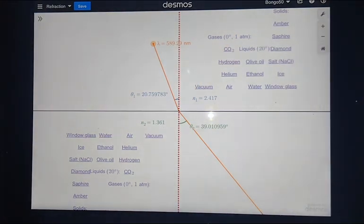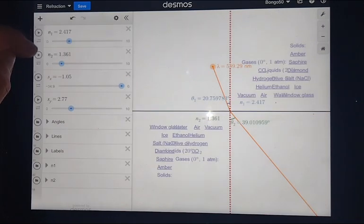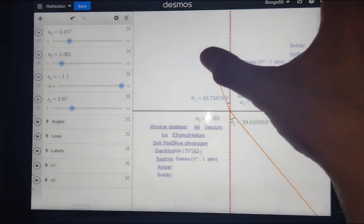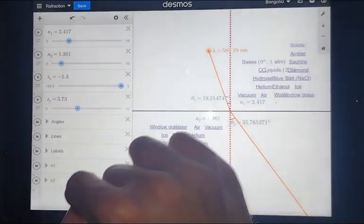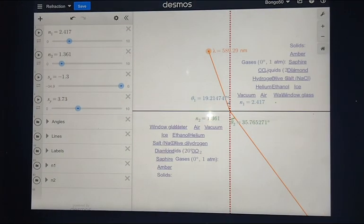You can do various other materials. If you want to input a custom refractive index you can do so here with n1 and n2. S of x and S of y control the position of the point, and these folders down here contain all of the inner workings which you can look at if you're interested.